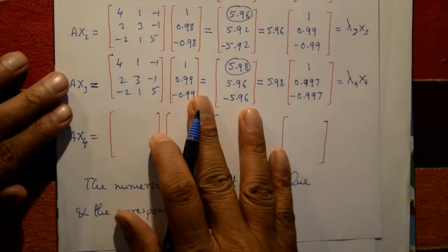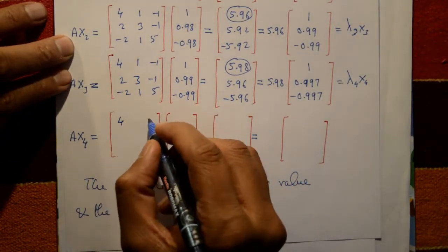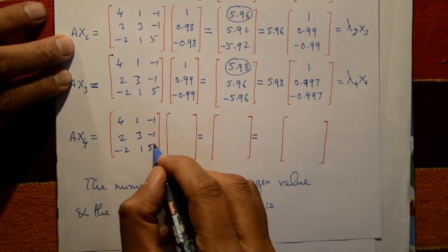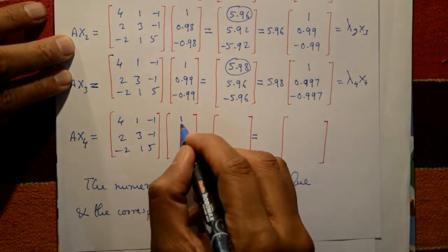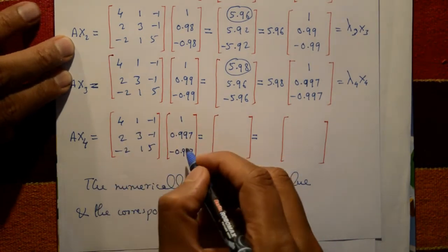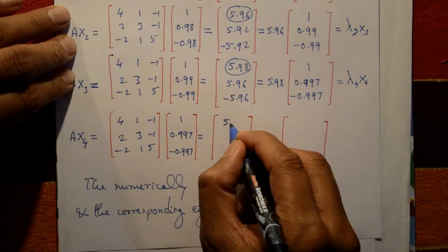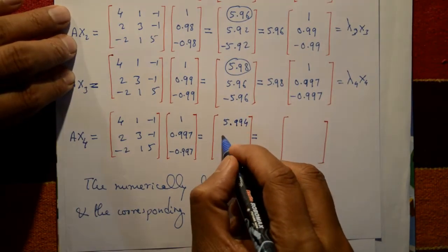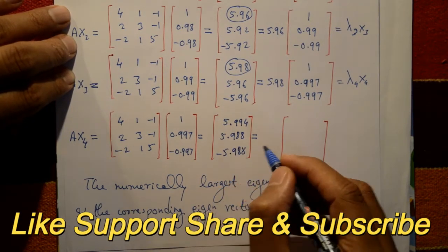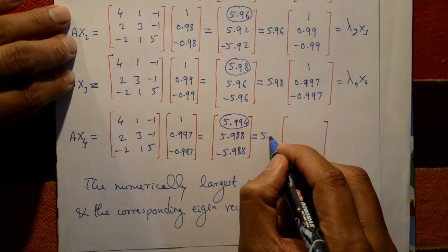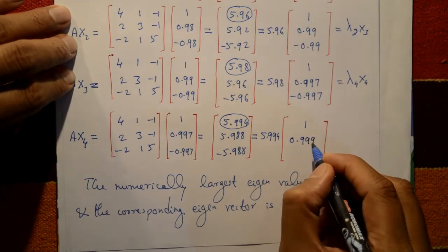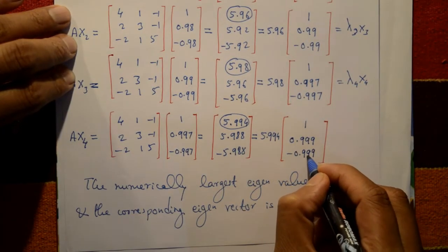Now the last fifth iteration: compute A·x4. Matrix A = [4, 1, -1; 2, 3, -1; -2, 1, 5] and x4 = [1, 0.997, -0.997]ᵀ. After multiplication, the elements are 5.994, 5.988, and -5.988. The largest element is 5.994; taking it outside gives inside [1, 0.999, -0.999]ᵀ. This is the fifth iteration.